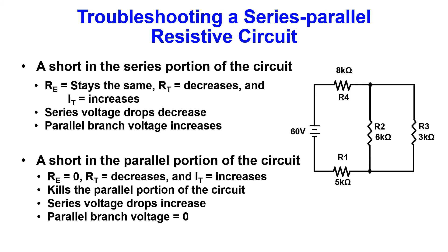A short in the parallel portion of the circuit is going to kill the parallel portion which will bring the RE to zero and RT will decrease. Because RT decreases, IT will increase. Series voltage drops will increase and the parallel branch voltage will drop to zero volts.